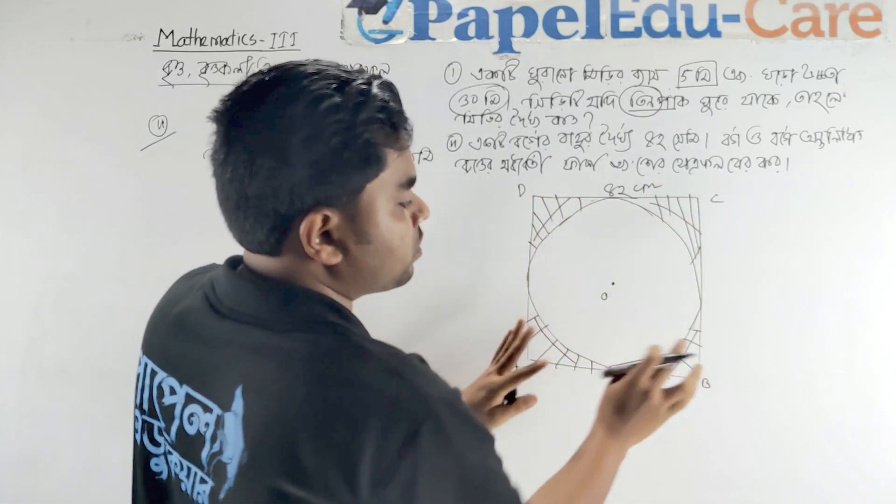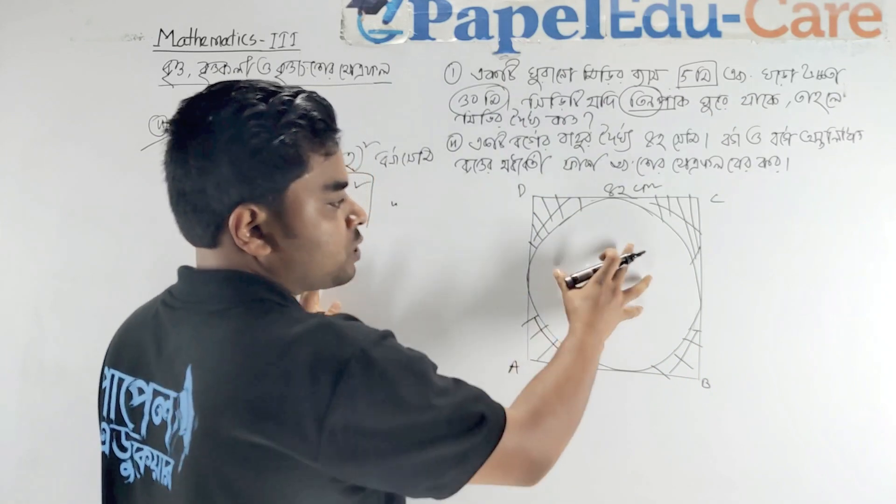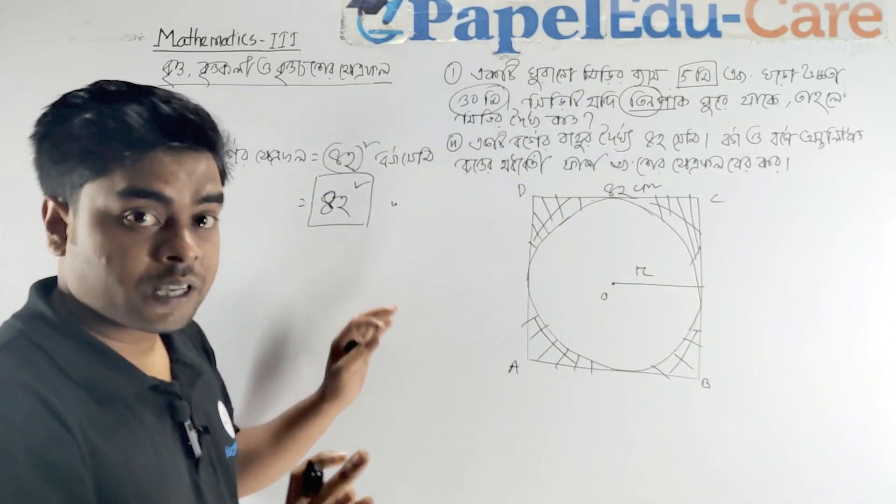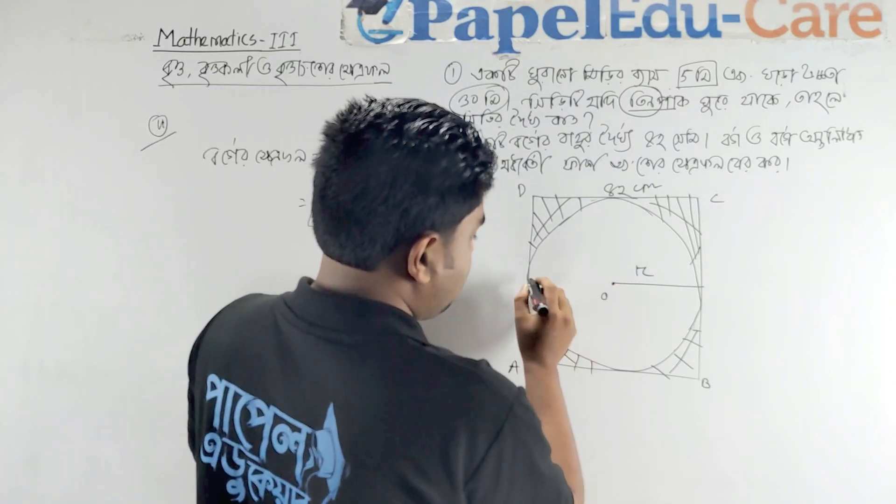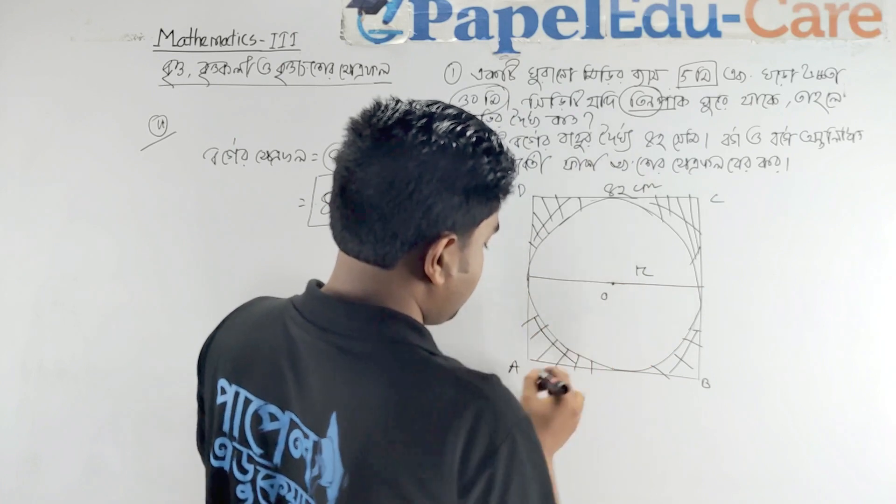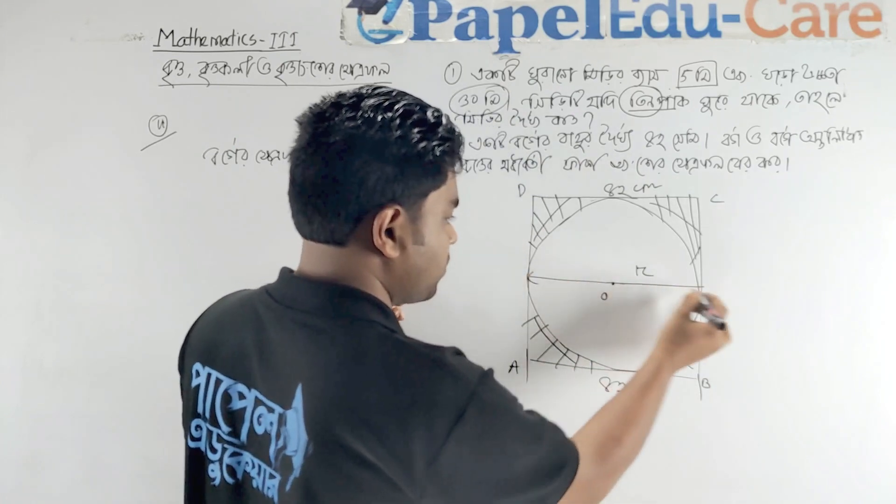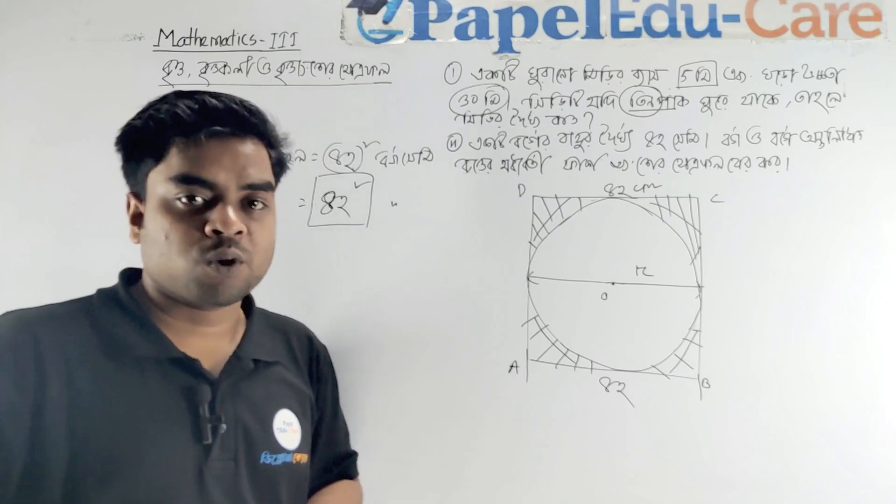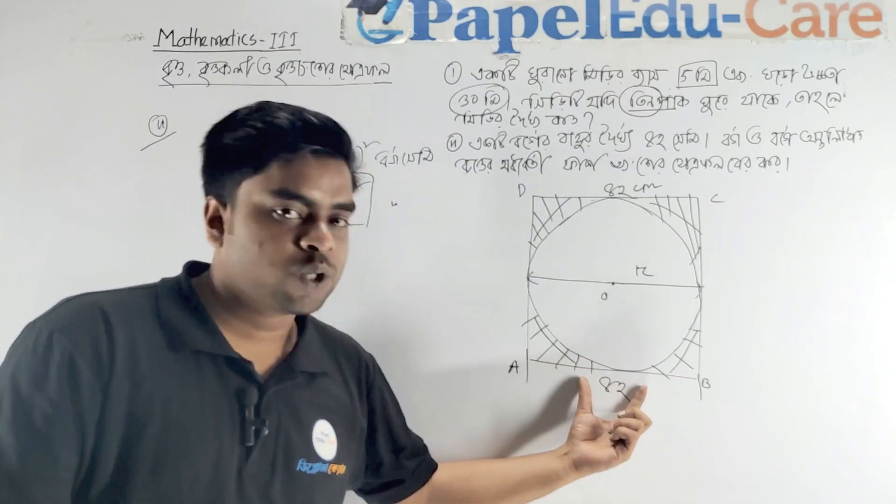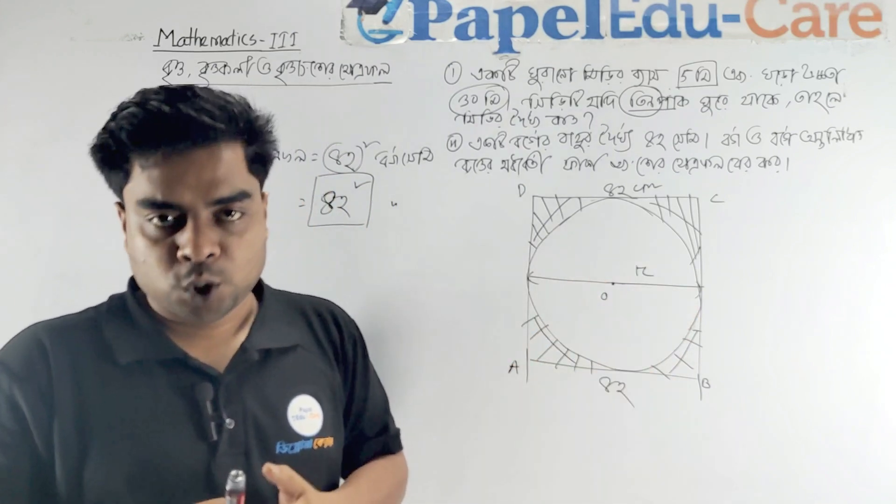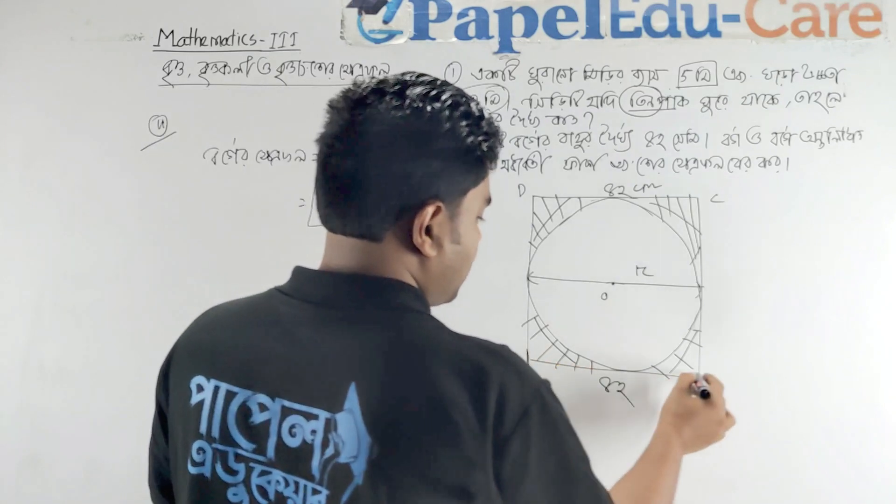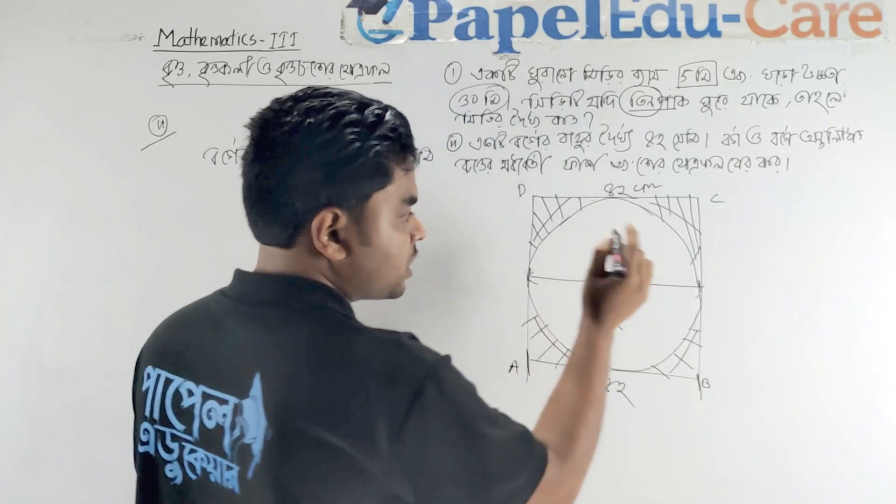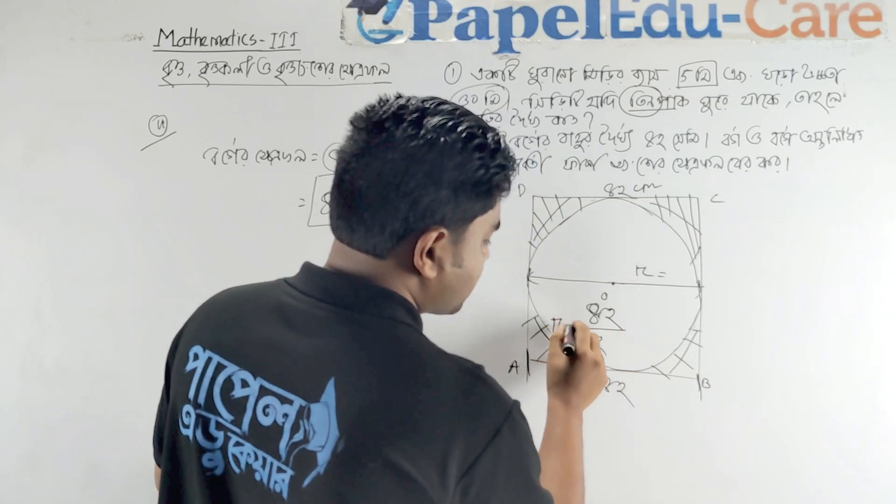The bitter cat area calculation: we have 82 squared for the total, and we need to find the specific portion. The base of the bitter section gives us the last part of 41 centimeters - this is half of 82.